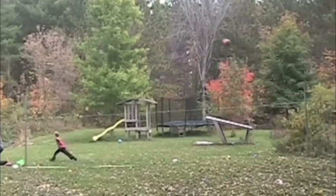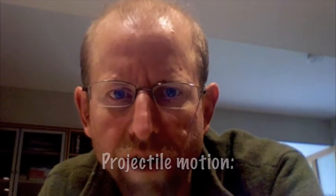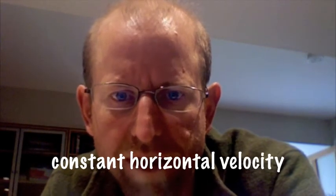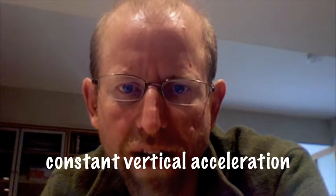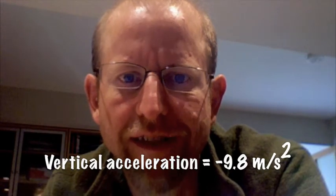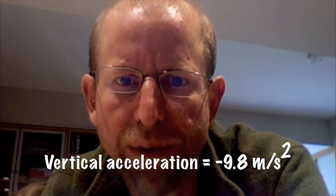For example, watch this soccer ball. If an object is in projectile motion, we'll see that its horizontal or sideways velocity remains constant throughout its flight, but its vertical velocity changes. Gravity causes it to accelerate towards the ground at 9.8 meters per second squared. That means for every second of flight, its downward velocity will increase by about 10 meters per second.